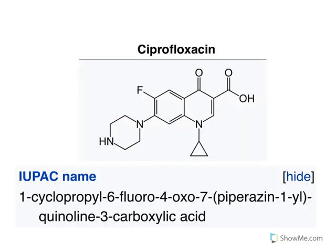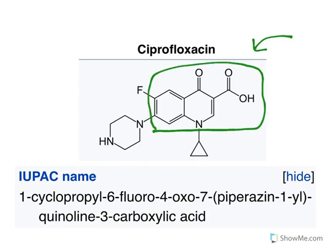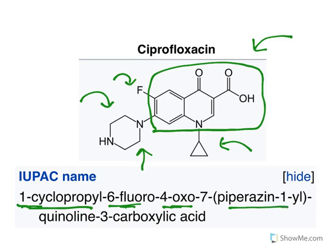In the syllabus, ciprofloxacin synthesis and its structure are given. The basic quinoline ring is common. The substitutions are: cyclopropyl at position 1, fluorine at position 6, oxo at position 4, piperazine ring at position 7, and carboxylic acid at position 3. Alphabetically arranged: 1-cyclopropyl, 6-fluoro, 4-oxo, 7-piperazinyl, quinoline, 3-carboxylic acid.